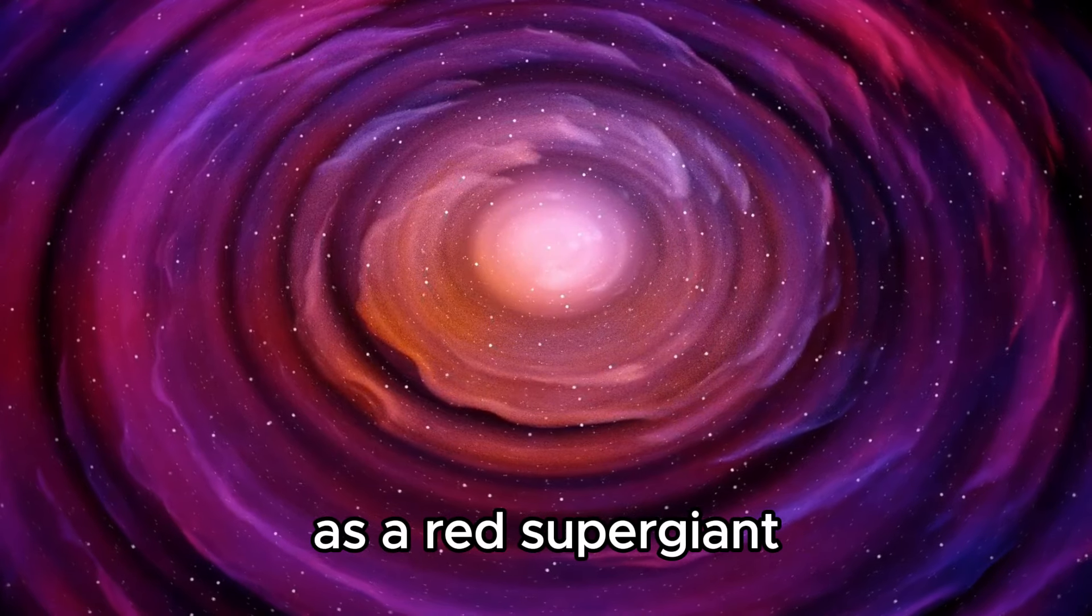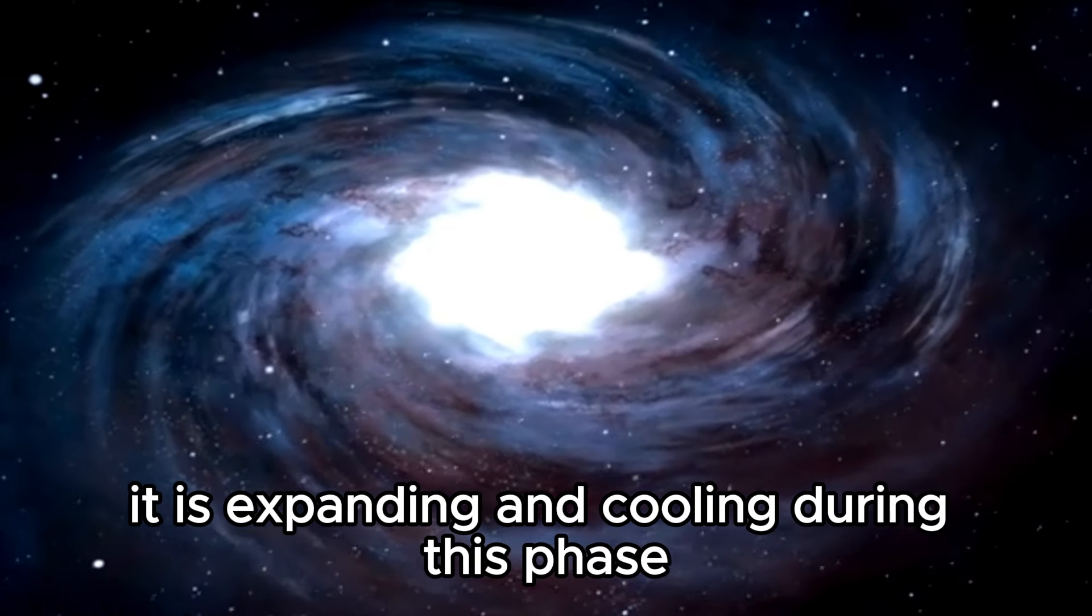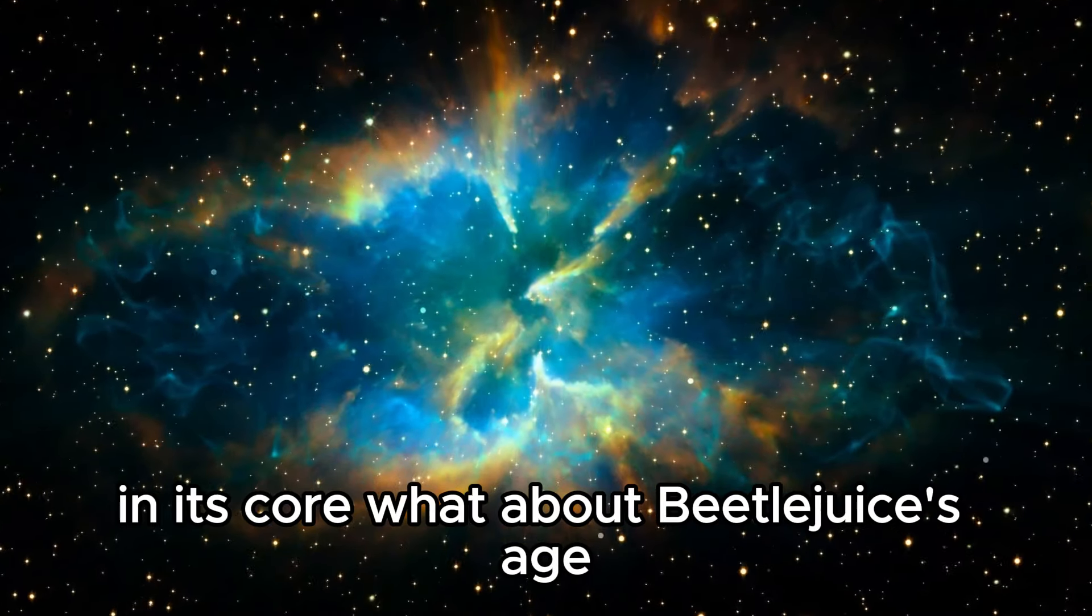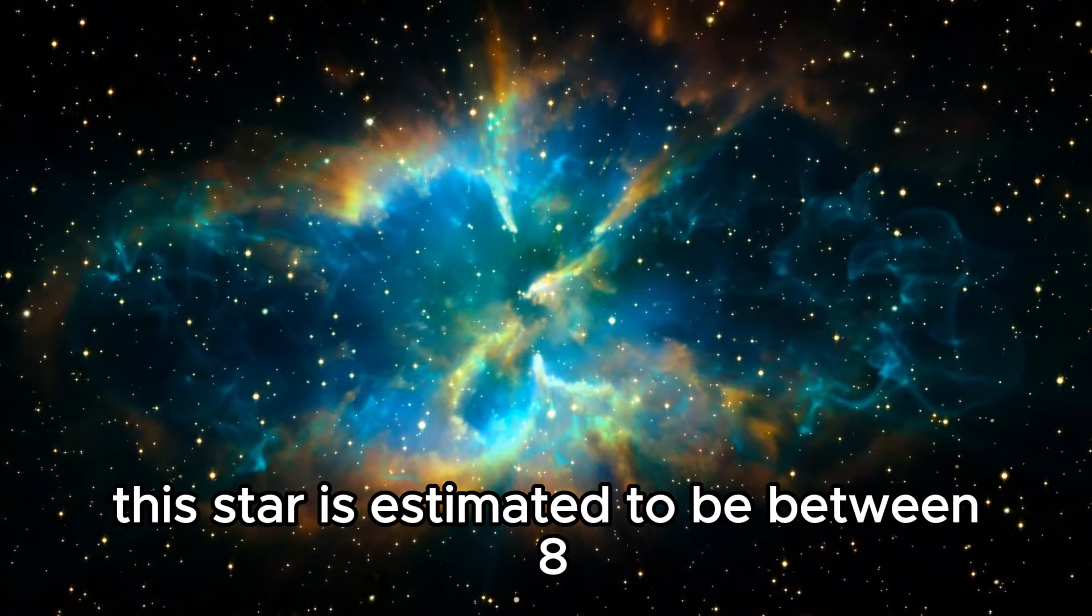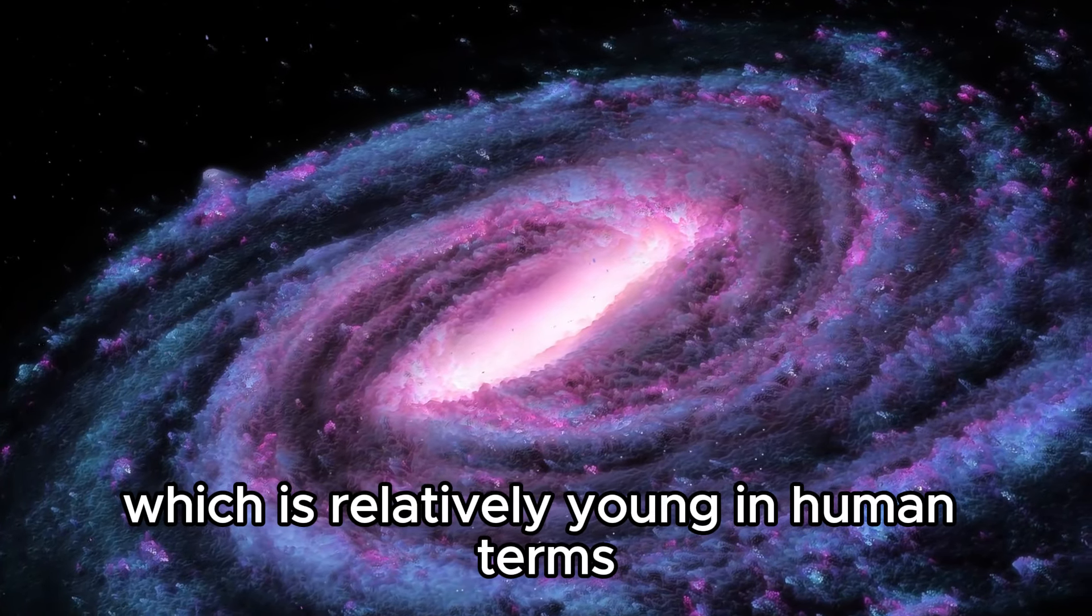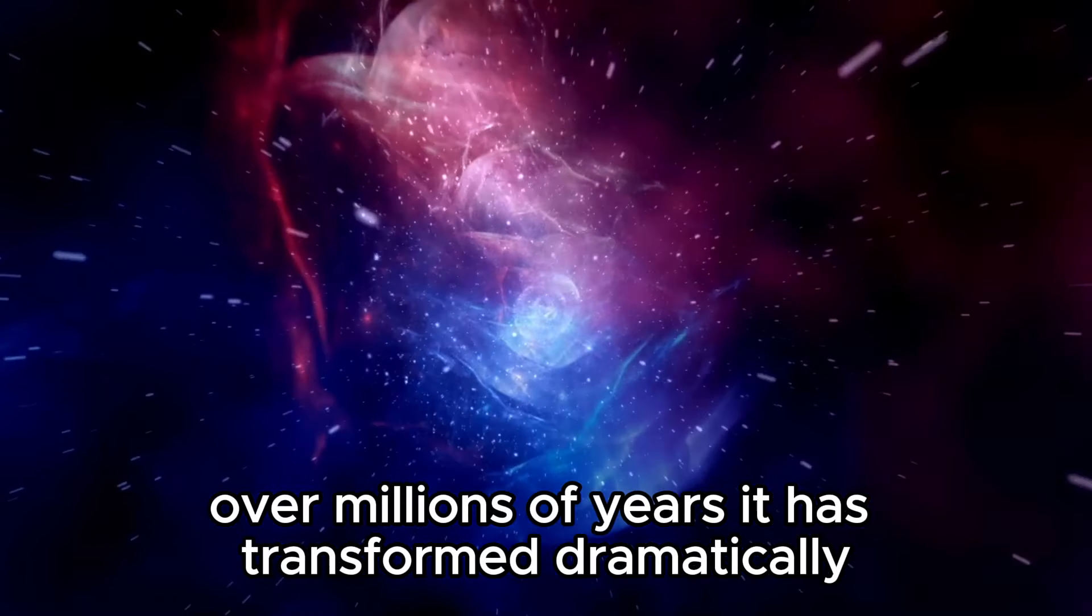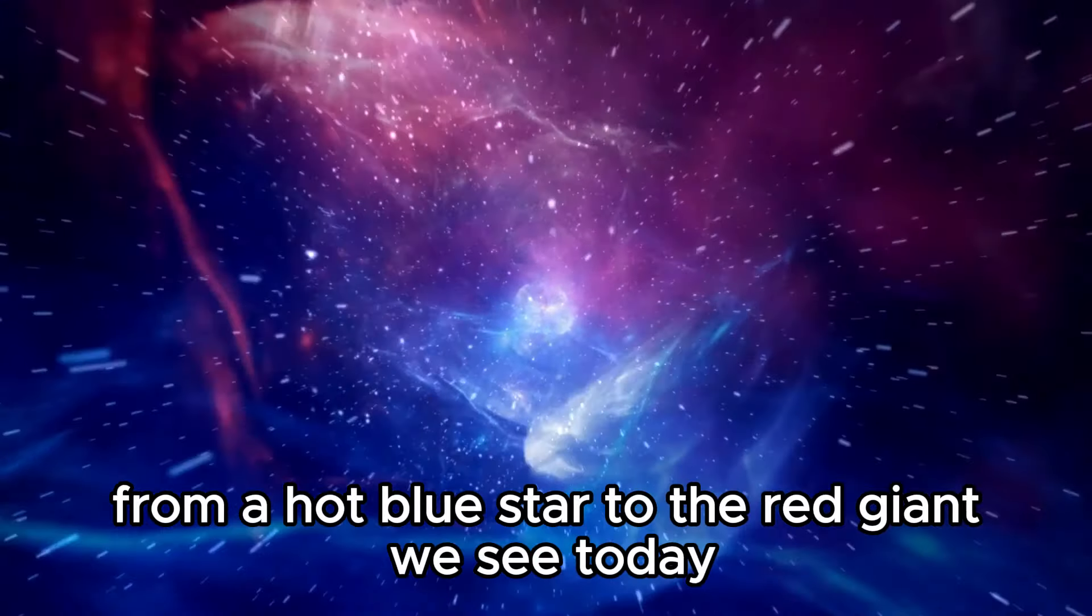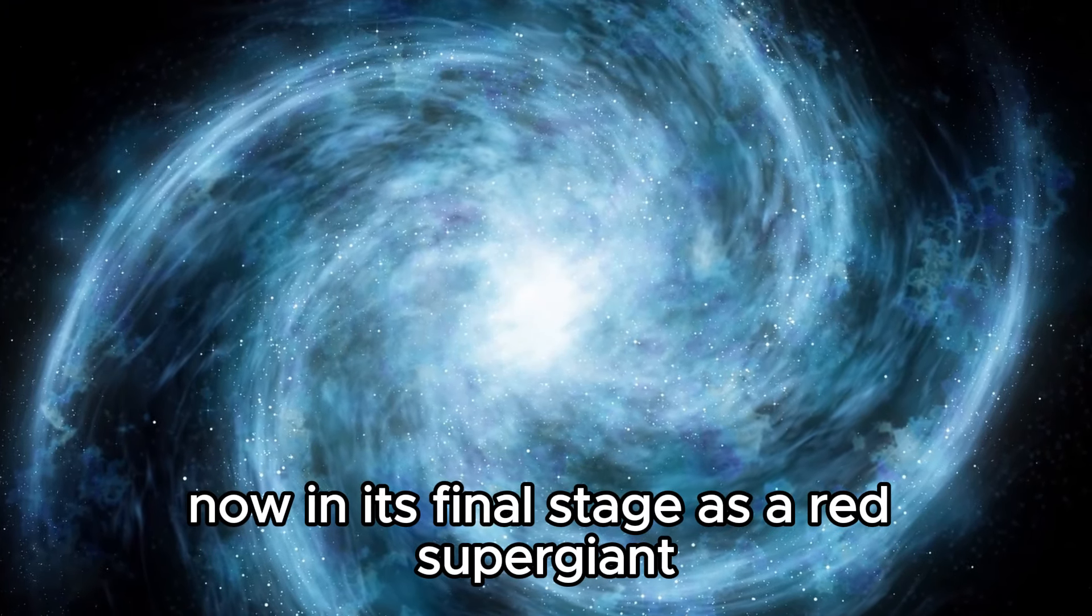As a red supergiant, Betelgeuse is nearing the end of its life. It is expanding and cooling during this phase, which follows the conversion of hydrogen into helium in its core. This star is estimated to be between 8 and 8.5 million years old, relatively young in human terms but ancient in the context of stellar lifespans. Over millions of years, it has transformed dramatically from a hot blue star to the red giant we see today.